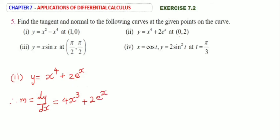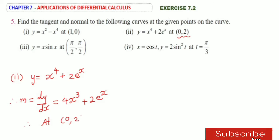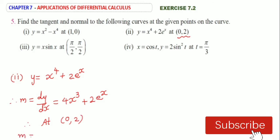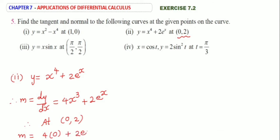The question level point is (0, 2). Therefore at (0, 2), slope m is equal to 4 into 0 plus 2 into e power 0. So 4 into 0 is 0, plus 2 into e power 0 is 1. So this is equal to 2.